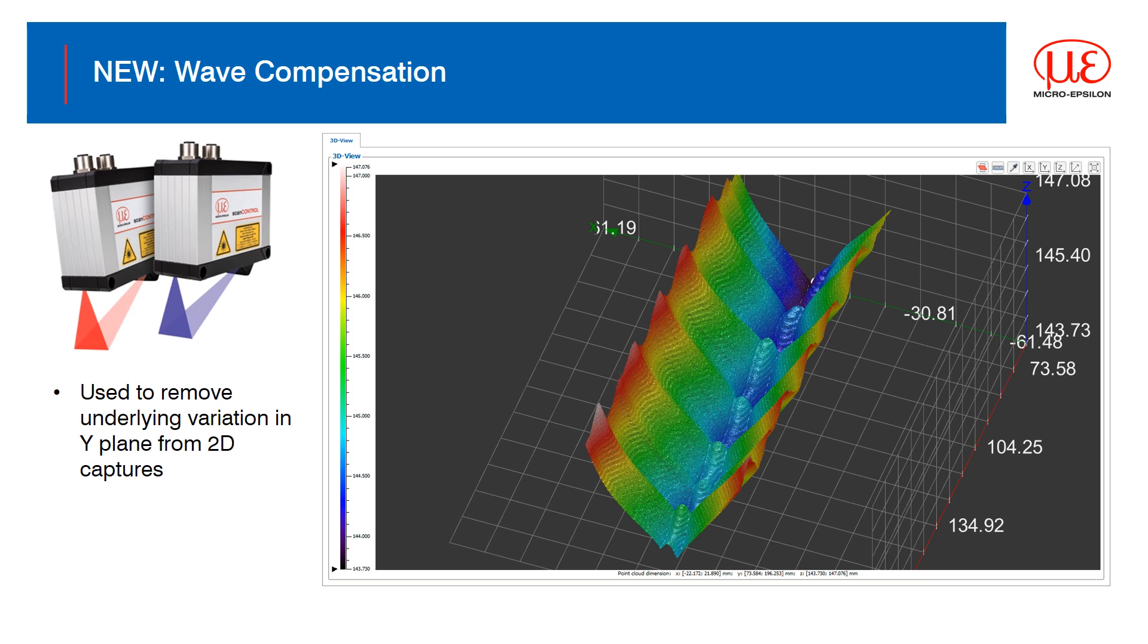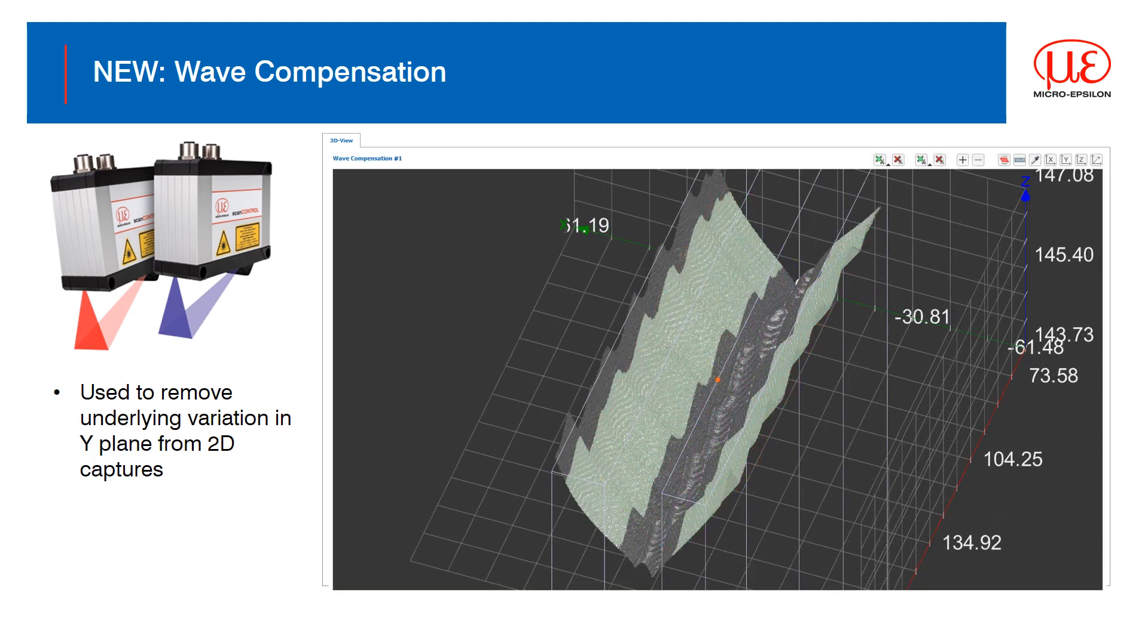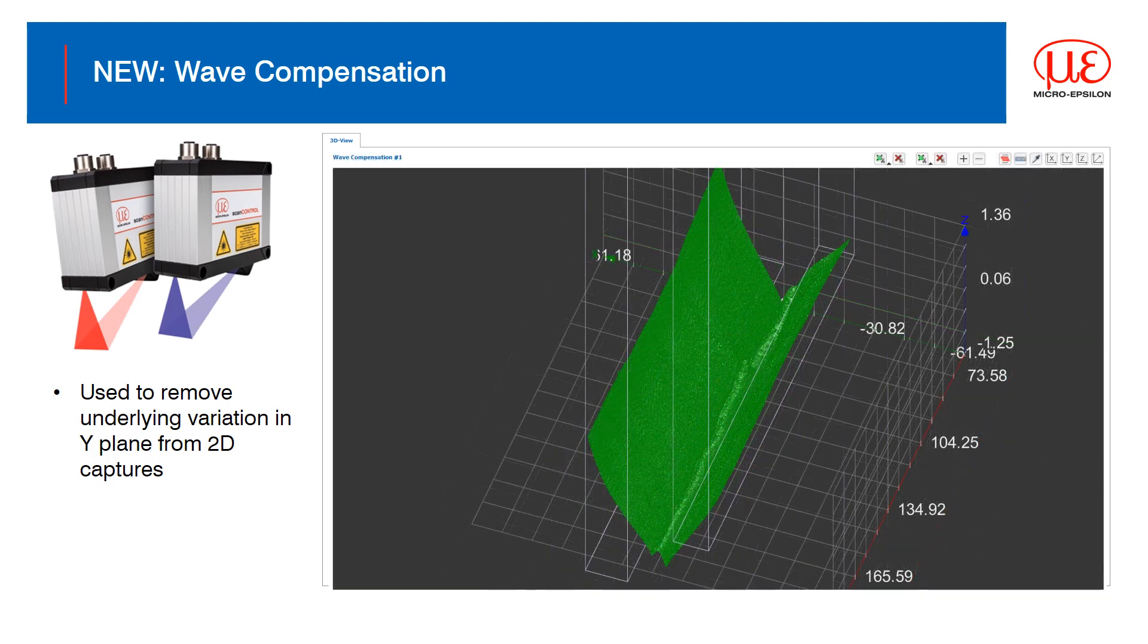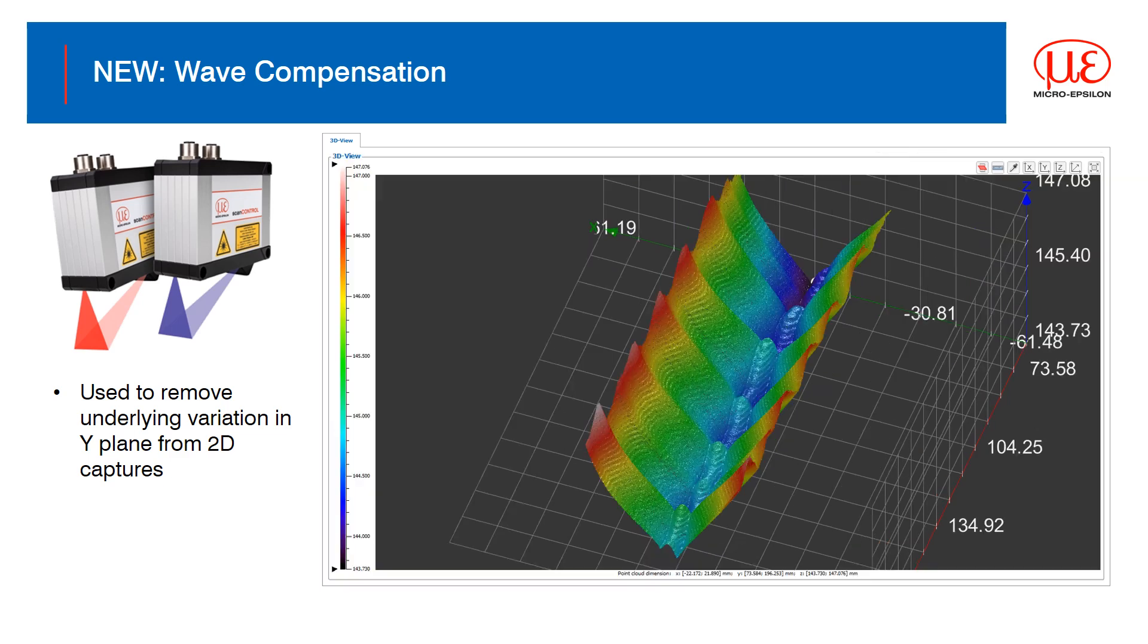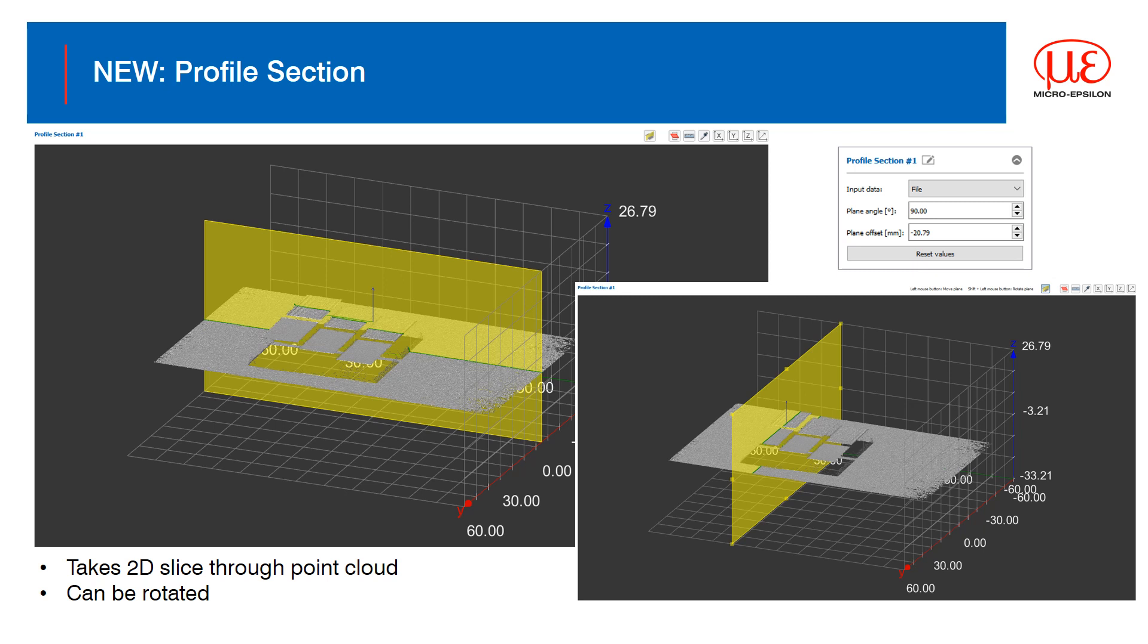A new function available is wave compensation, which is particularly useful when capturing the 3D data from a scan control device where there is a possibility that the point cloud from one profile to the next may not be in exactly the same vertical position due to the methods used to move the sensor or the target. Using the new wave compensation allows us to remove that underlying bounce from the data.